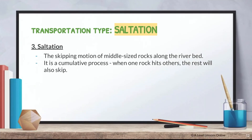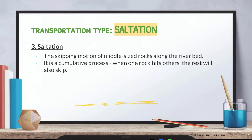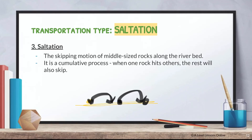Saltation is the skipping motion of middle-sized rocks along the river bed. Think of rocks just skipping along the river bed. When one rock hits another through this cumulative process, all of them start to move — they jump and bump into each other, passing on the motion.